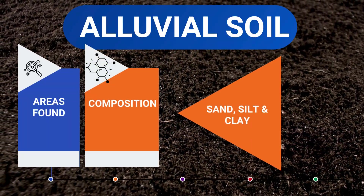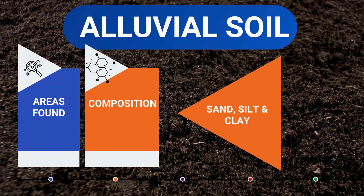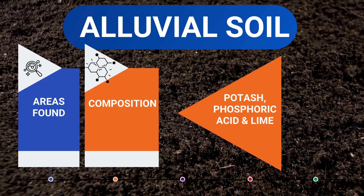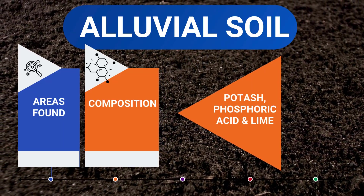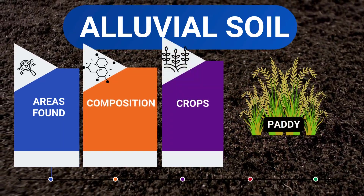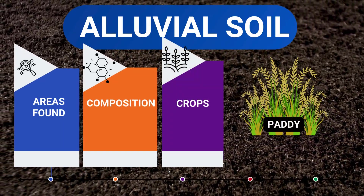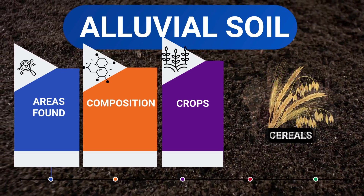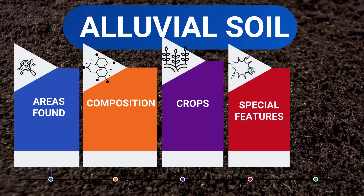In terms of composition, it contains sand, silt and clay, and it also has potash, phosphoric acid and lime, which supports the cultivation of crops like paddy, wheat, sugarcane, cereals and pulses.